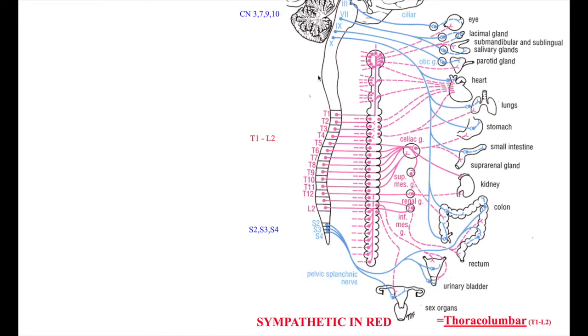This is a more anatomical view of the autonomic nervous system. In red, we have sympathetic, known for its fight and flight. And in blue, we have the parasympathetic, known for its rest and digest.